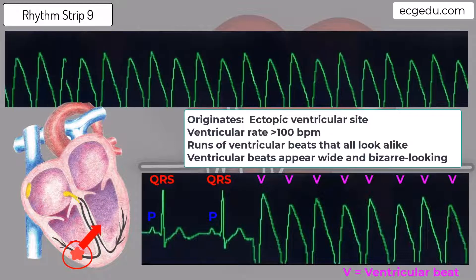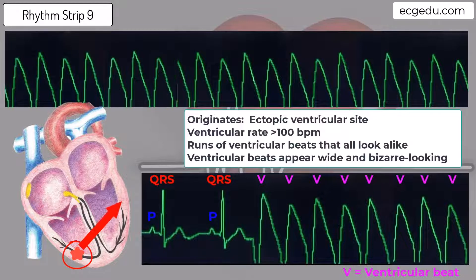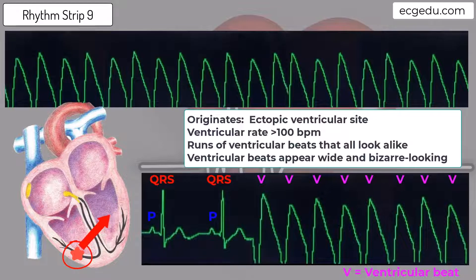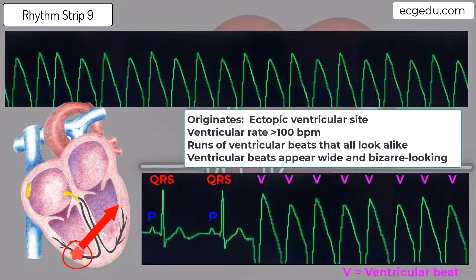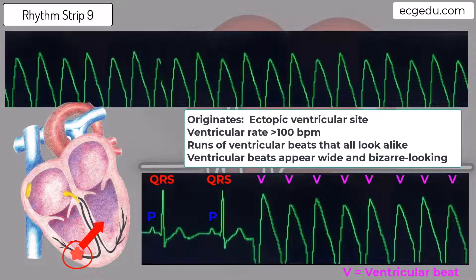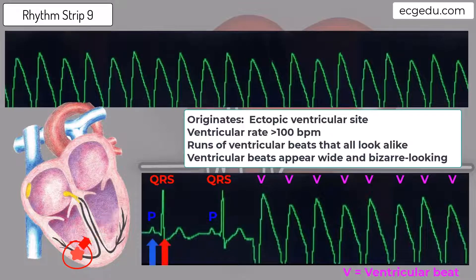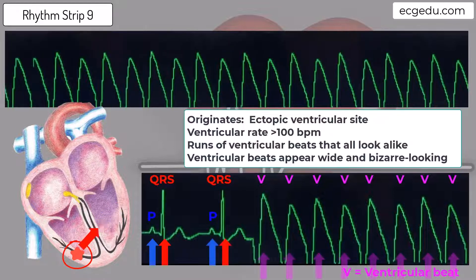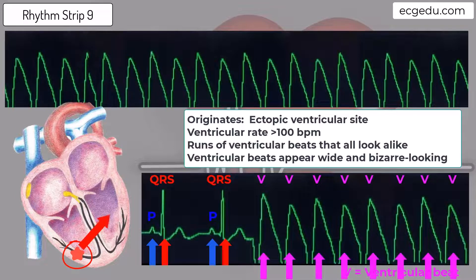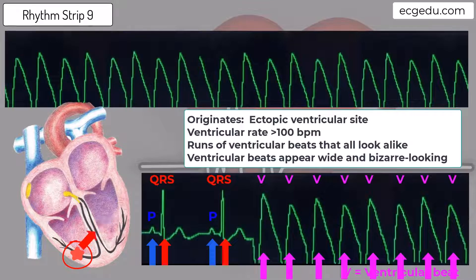Runs of ventricular tachycardia lasting less than 30 seconds are called non-sustained. Runs lasting more than 30 seconds are called sustained. In this example, you see a sinus beat — PQRS — followed by another sinus beat — PQRS — followed by multiple premature ventricular beats in a row.